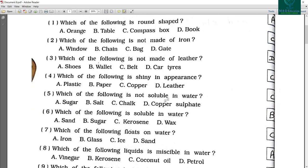Which of the following is not made of leather? So here car tires are not made from leathers. Which of the following is shiny in appearance? So answer is copper. Which of the following is not soluble in water? So chalk is not soluble in water.